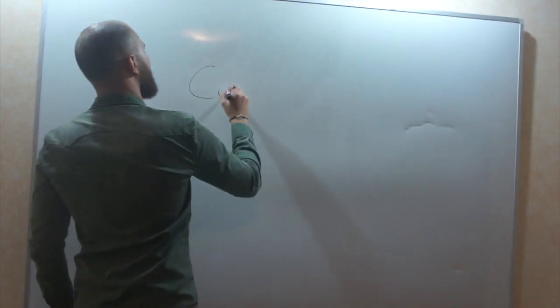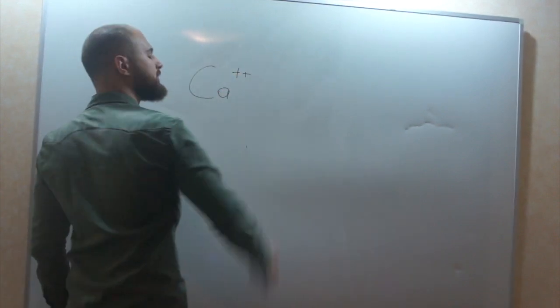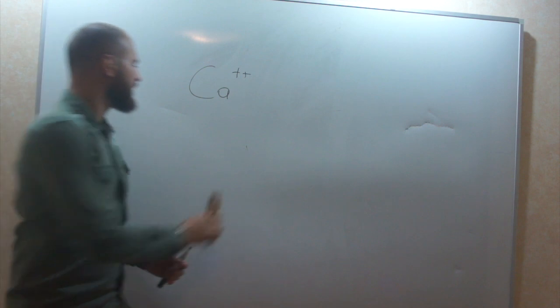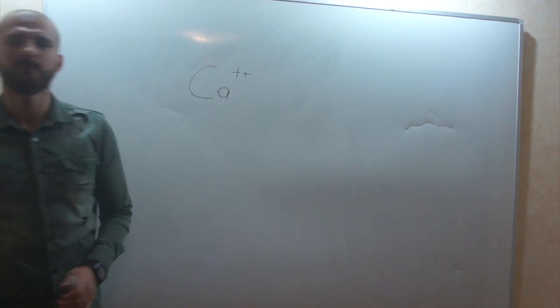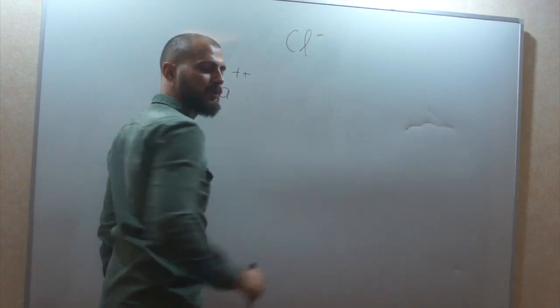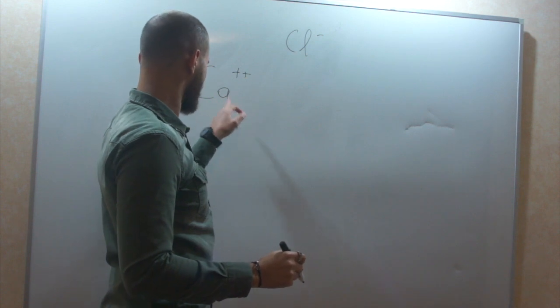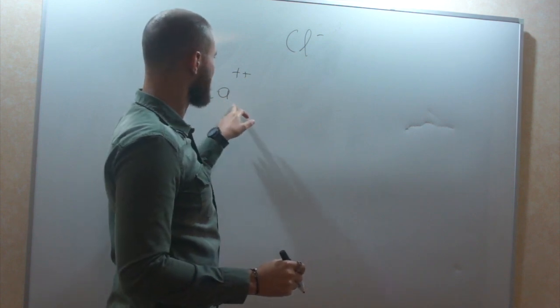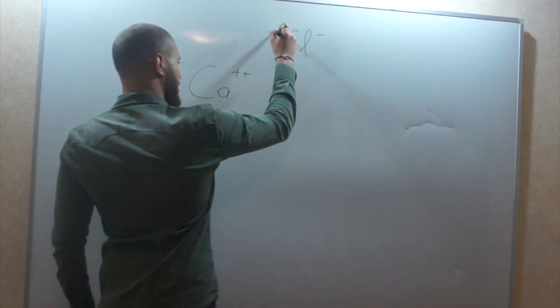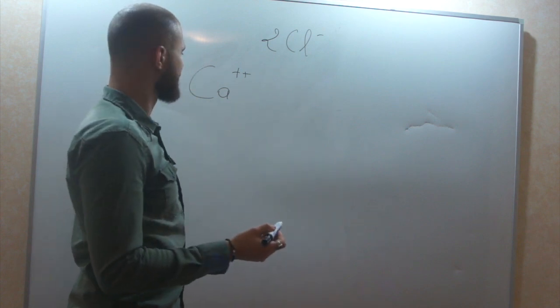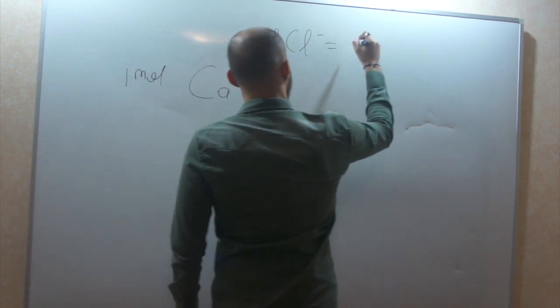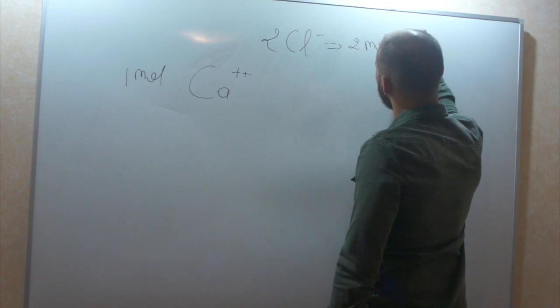Something like that. We have Ca++. We have 2+. So, it lacks 2 electrons. As simple as that. You have chloride that has 1 electron to give. So, if you have 1 calcium. You have the electro-equilibrium. You need 2 chloride. So, for 1 mole of calcium, you will need 2 mole of chloride.